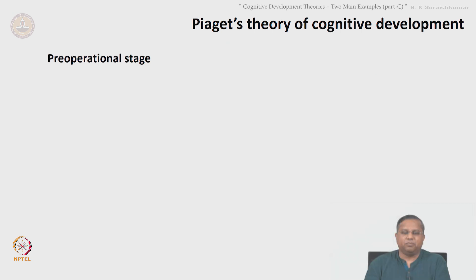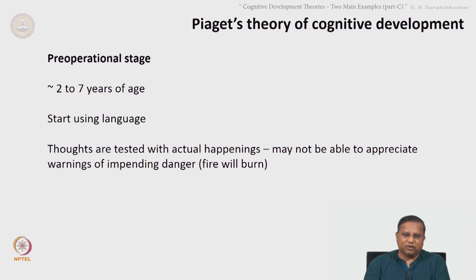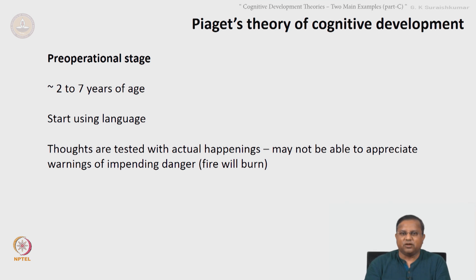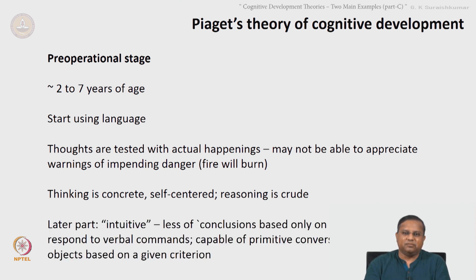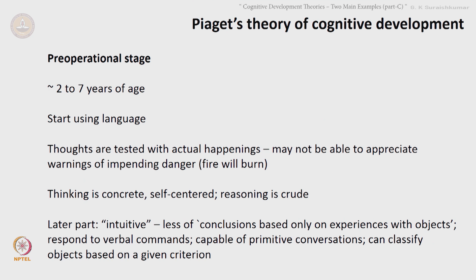The next stage is called the pre-operational stage, typically from two to seven years of age — these are typical values. Children start using language; thoughts are tested with actual happenings. They may not be able to appreciate warnings of impending danger — a fire will burn may not make much sense to a child until the child actually burns a finger. Thinking is concrete and self-centered, and reasoning is crude. In the later part of the pre-operational stage, intuitive aspects come in; they respond to verbal commands, are capable of primitive conversation, and can classify objects based on a given criteria.